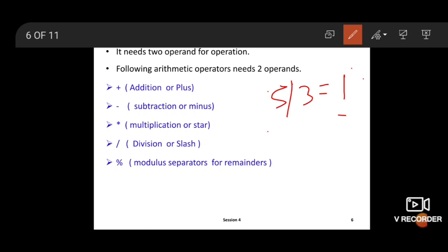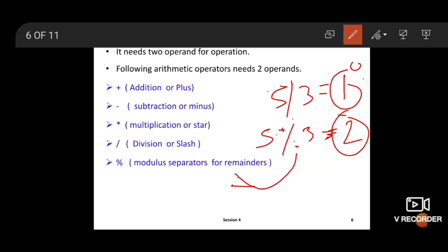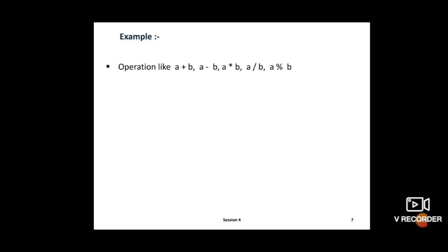Now, same example: 5 modulus 3. The modulus operator is used, so the answer is 2, which is the remainder. So the division operator prints the quotient, and the modulus operator prints the remainder. Operations in binary operators: a + b, a - b, a * b (a multiplied by b), a / b (a divided by b), and a % b (a modulus b).